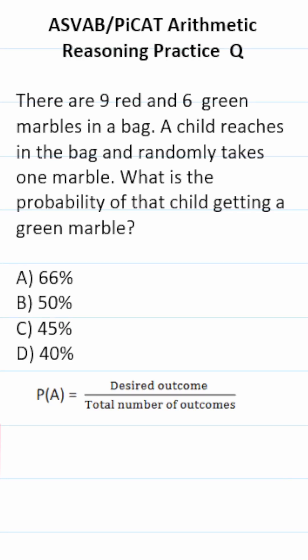ASVAB/PICAT arithmetic reasoning practice test question: There are 9 red and 6 green marbles in a bag. A child reaches in the bag and randomly takes one marble. What is the probability of that child getting a green marble?